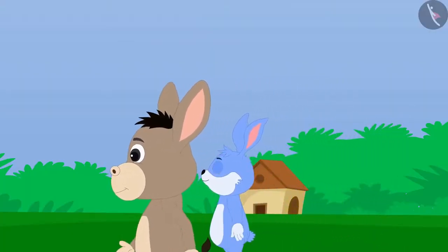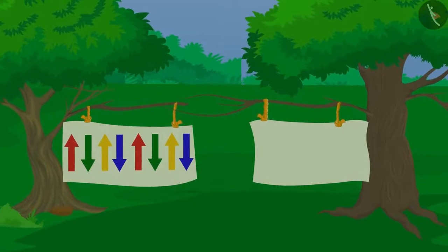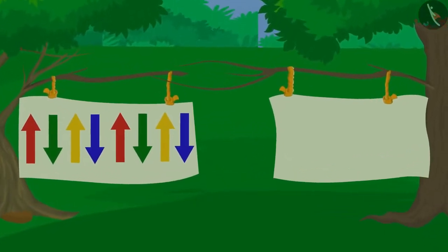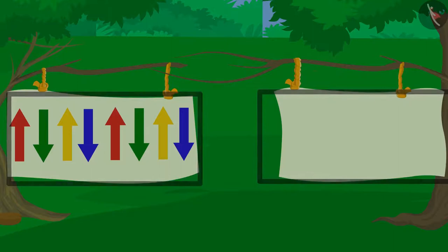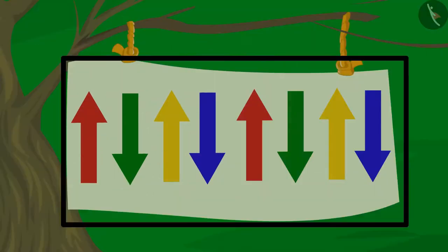At some distance, they saw a curtain between two trees. The curtain is divided into two parts. This kind of a pattern is made on one part of the curtain.